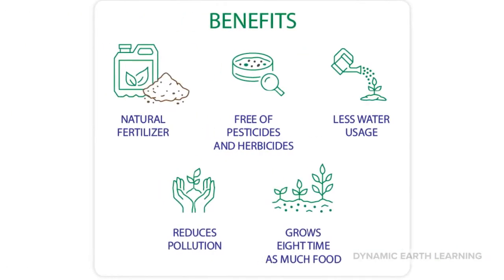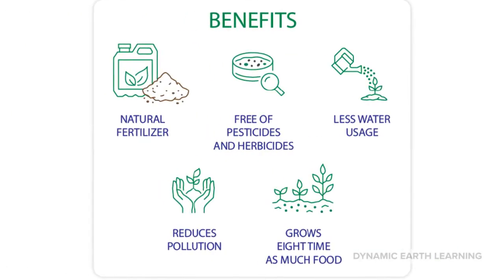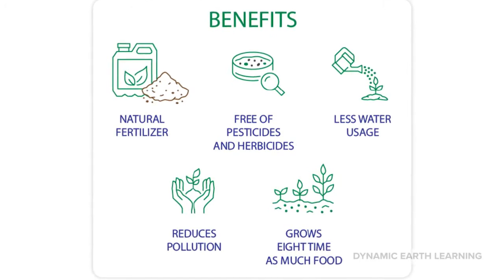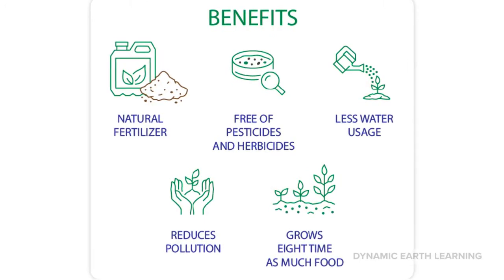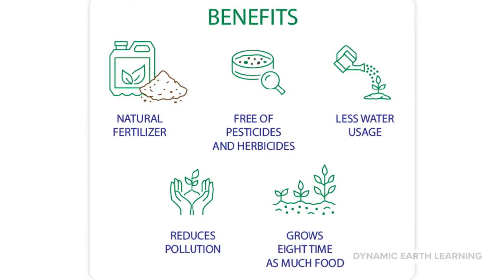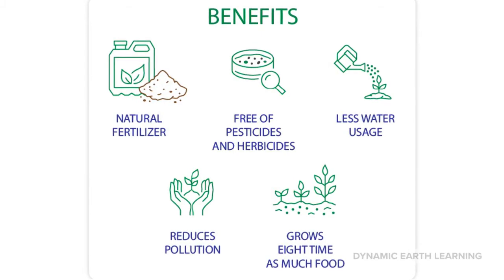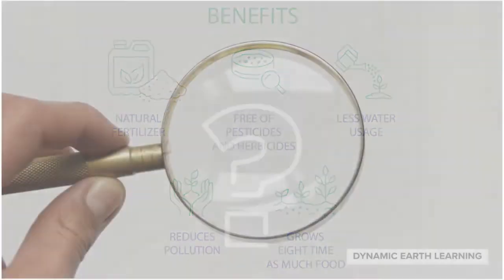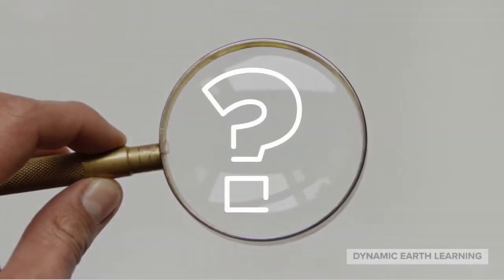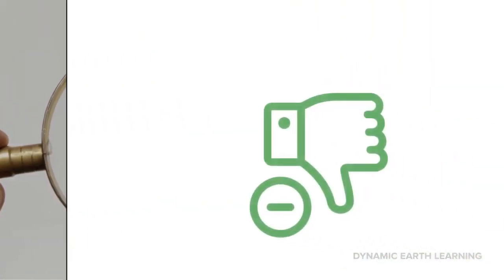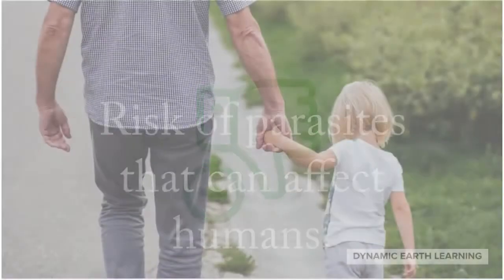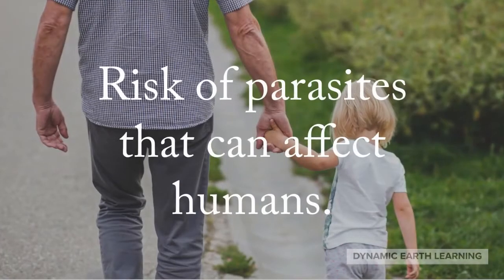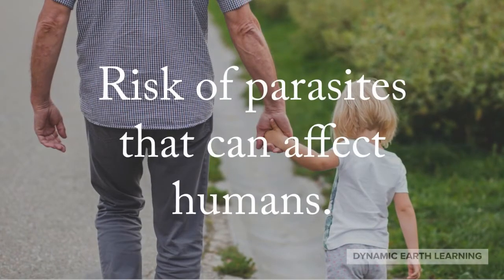Aquaponic growing methods have many positive benefits and outcomes, like being environmentally responsible and requiring no chemical usage. But there's always another side to look at — there are disadvantages that require exploration and consideration as well. One such negative aspect is the risk of parasites that can affect humans.